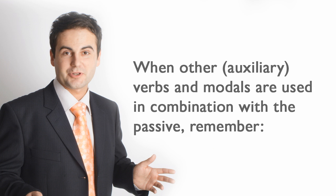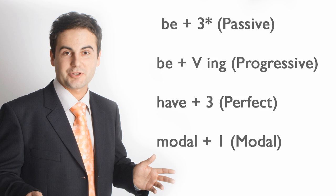When other auxiliary verbs and modals are used in combination with the passive, remember: be + 3 = passive; be + verb + ing = progressive; have + 3 = perfect; modal + 1 = modal.